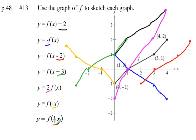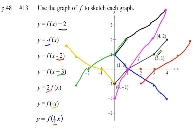Last graph: y equals f of one-half x. When we multiply by a number outside the function, it stretches or shrinks the graph — a number bigger than 1 stretches, a number between 0 and 1 shrinks. But inside the function it's the opposite, just like adding or subtracting inside gave us the opposite direction shift. So f of one-half x gives a horizontal stretch — instead of half as big, it's twice as big. The first point on the y-axis stays put. The second point, instead of at (1, 0), goes to (2, 0). The third, instead of (3, 1), goes to (6, 1). The fourth, instead of (4, 2), goes to (8, 2), and the graph stretches out accordingly.